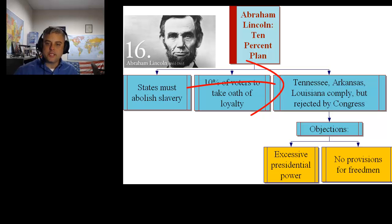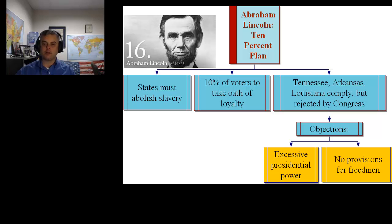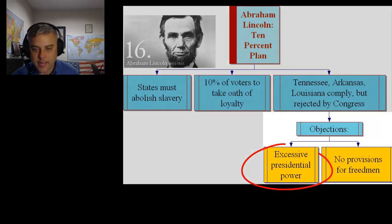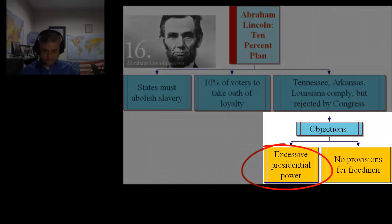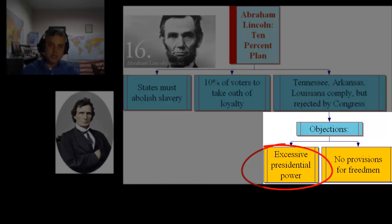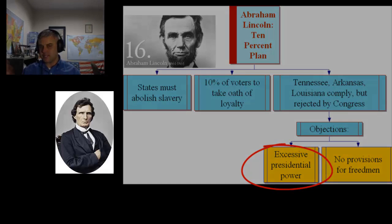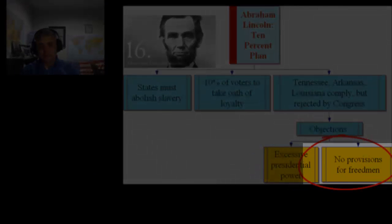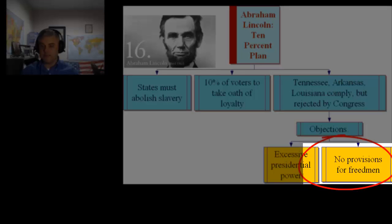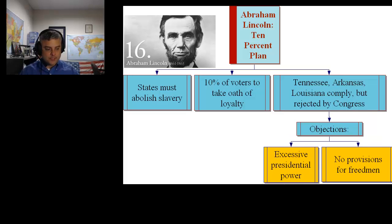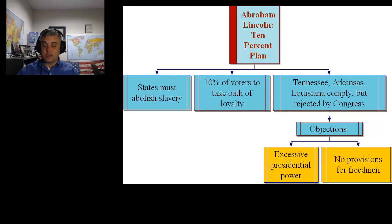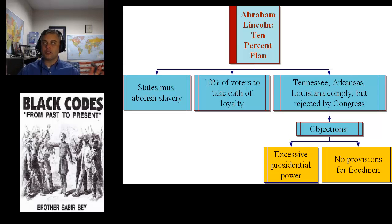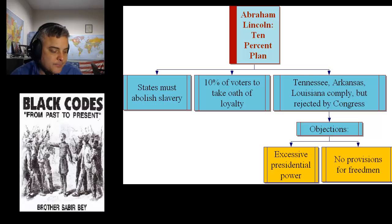Tennessee, Arkansas, and Louisiana complied, but later this whole idea was rejected by Congress. Those were the states brought back into the Union by Lincoln. The objections to this plan were that it was an excessive use of presidential power — from the perspective of people like Thaddeus Stevens — and there were no provisions for freed men. This is going to be a problem because the South, even though slavery is abolished by the 13th Amendment, is going to put in what are called Black Codes, which are really going to restrict newly freed people's rights in many ways.